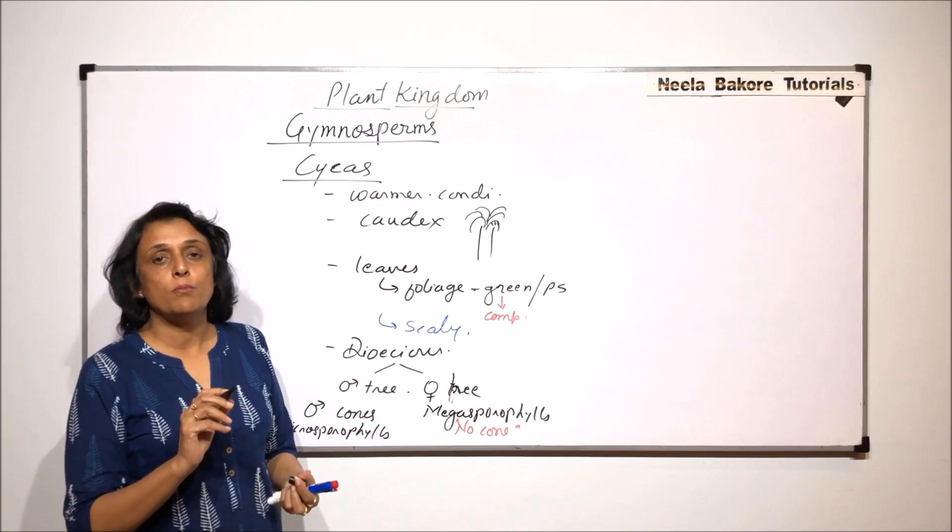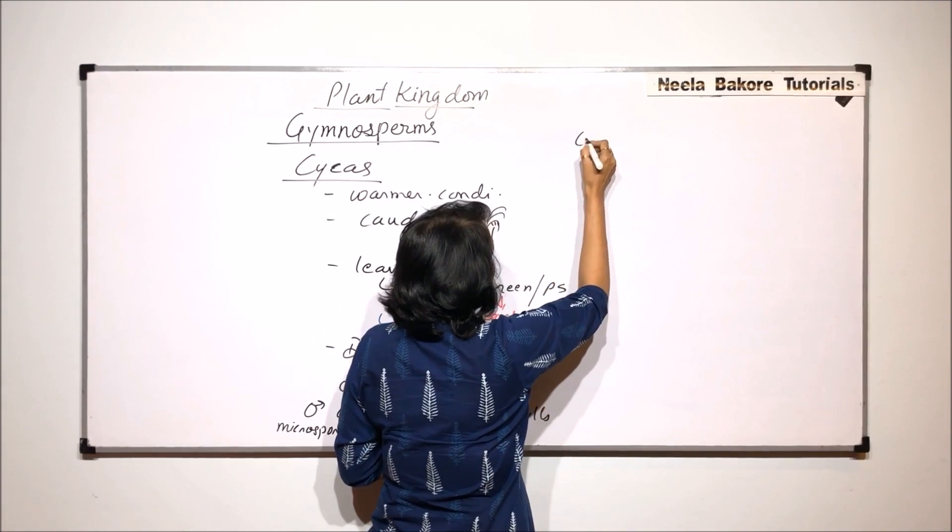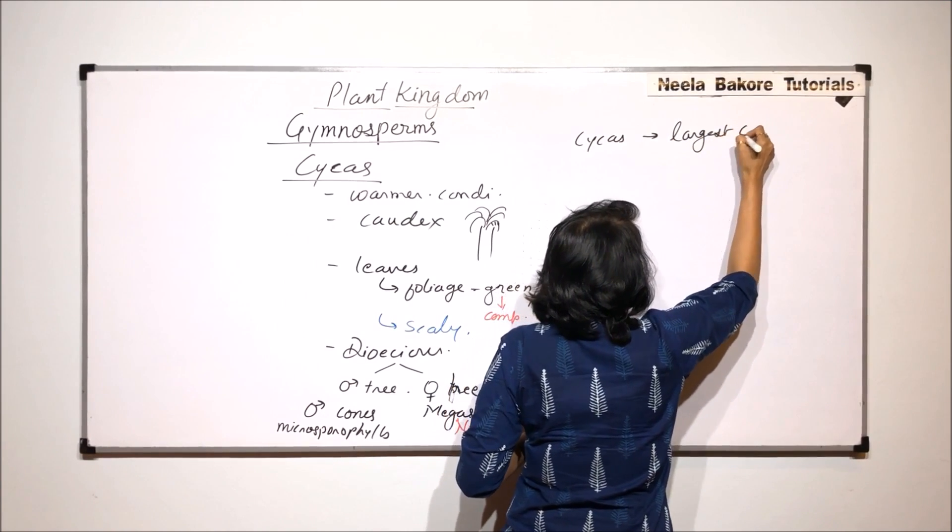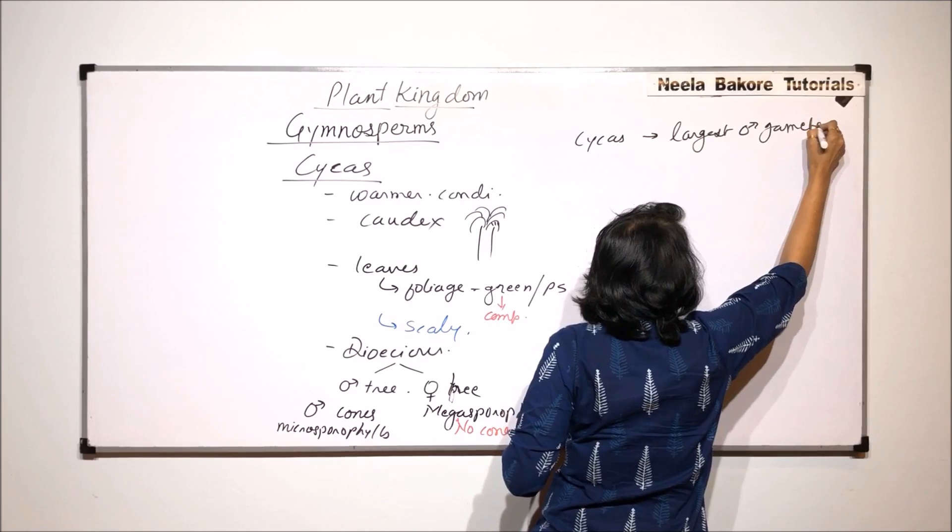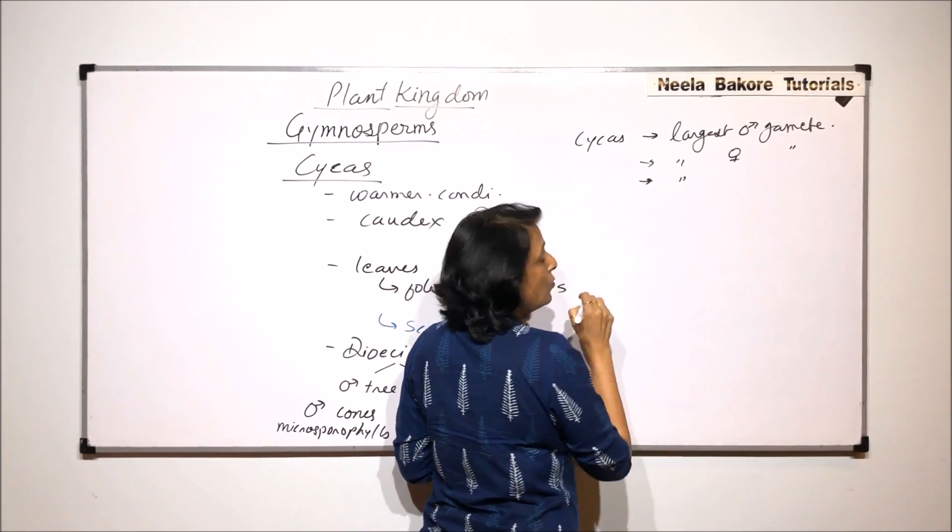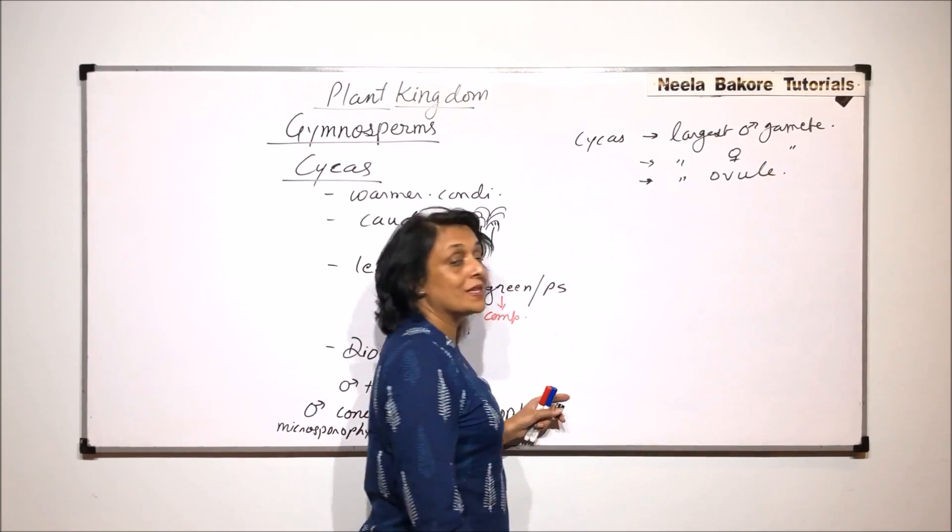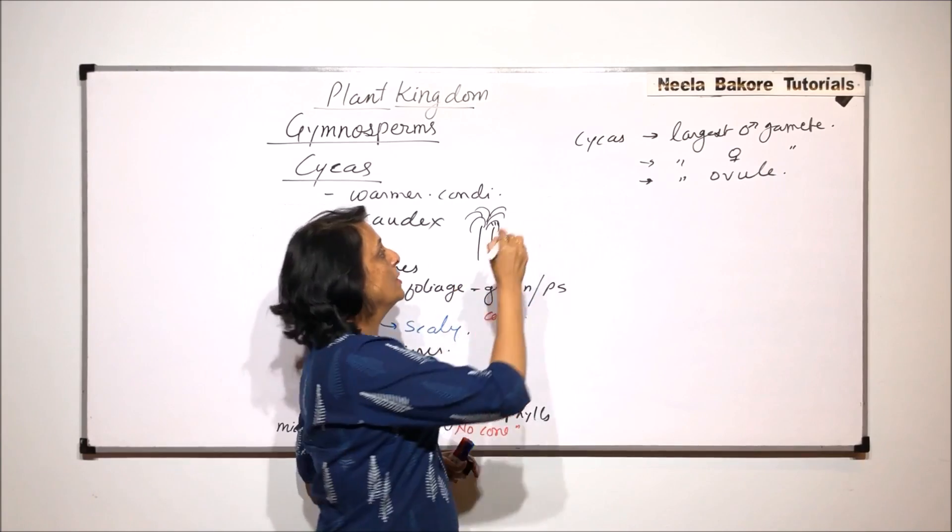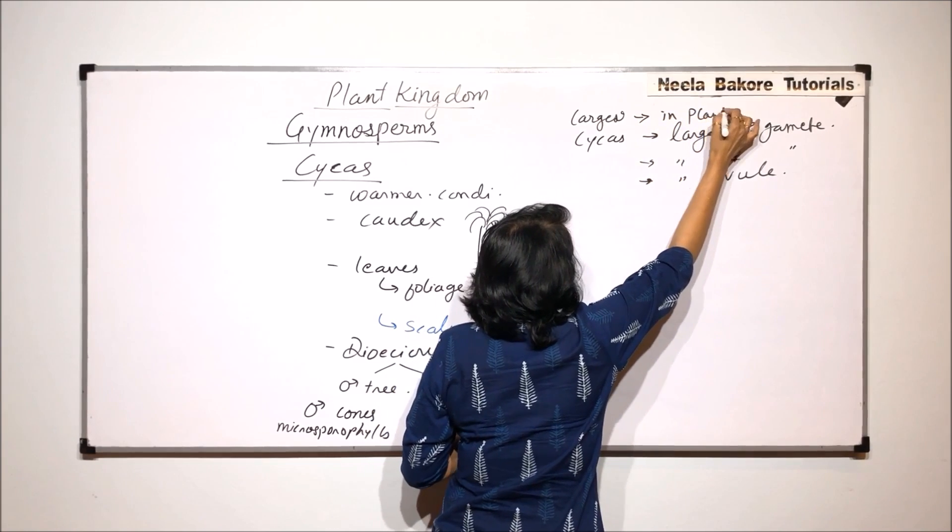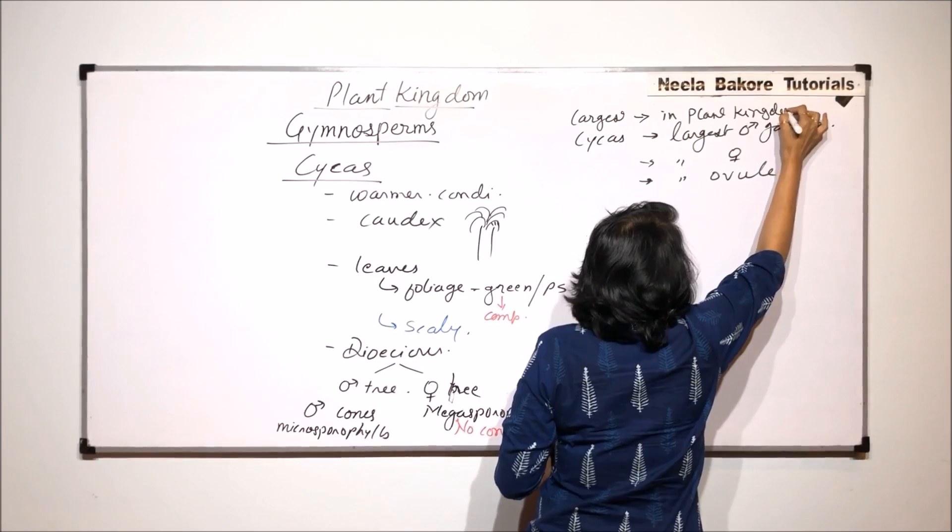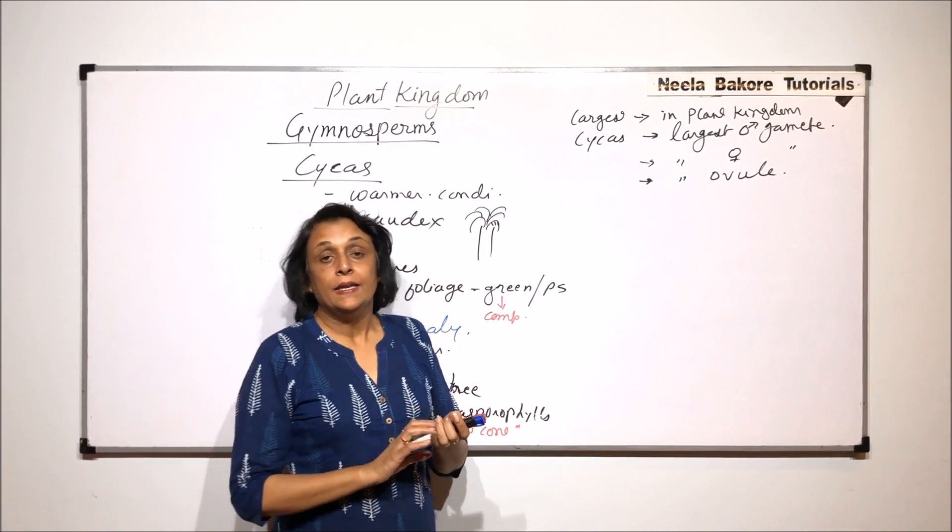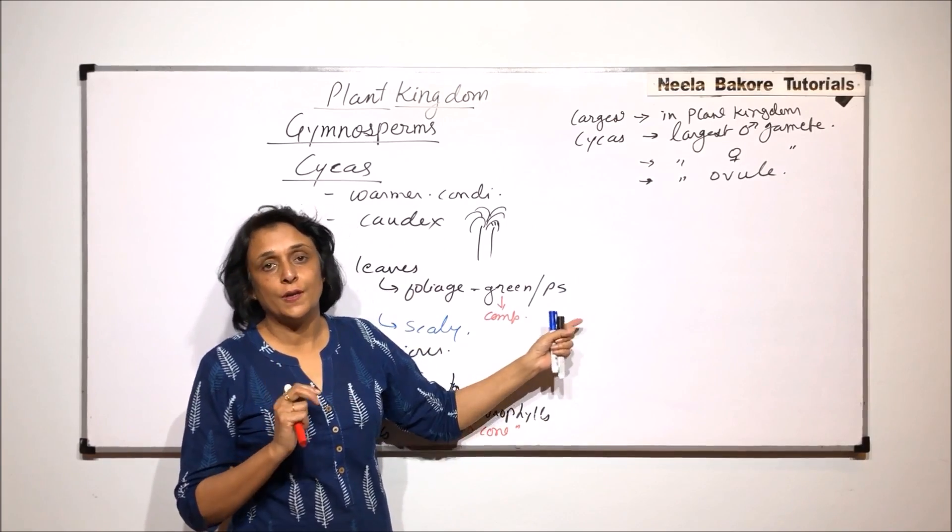Now when we talk of Cycas, we have to take three more important things. Number one is in Cycas we find the largest male gamete. In case of Cycas only we find the largest female gamete, and here only we find the largest ovule. This is the largest in the plant kingdom. So Cycas has the largest of all these structures in the plant kingdom. In plant kingdom, largest male gamete, largest female gamete, largest ovule all belong to Cycas.